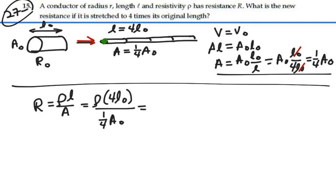Sixteen times rho L-naught over A-naught. But rho L-naught over A-naught is the original resistance. So this is going to be sixteen times our original resistance.